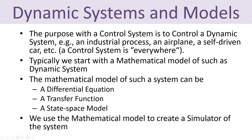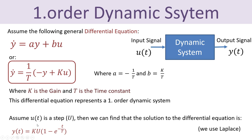Let's start with a first-order dynamic system. A first-order dynamic system can be described by a differential equation, which we can put on a standard form where T is the time constant and K is the gain of the process. This differential equation will be used throughout this tutorial in different applications and examples. We can also perform a step response for this system — we apply a step on the input signal, typically the control signal, and then we can see the behavior and performance of the system on the output.